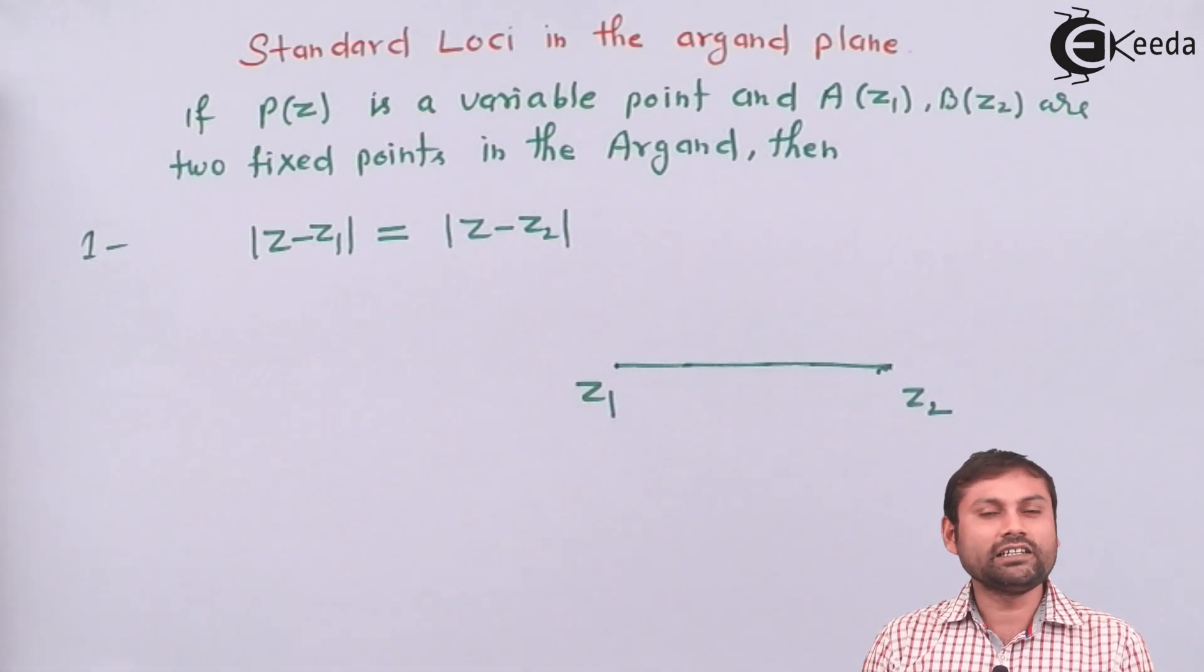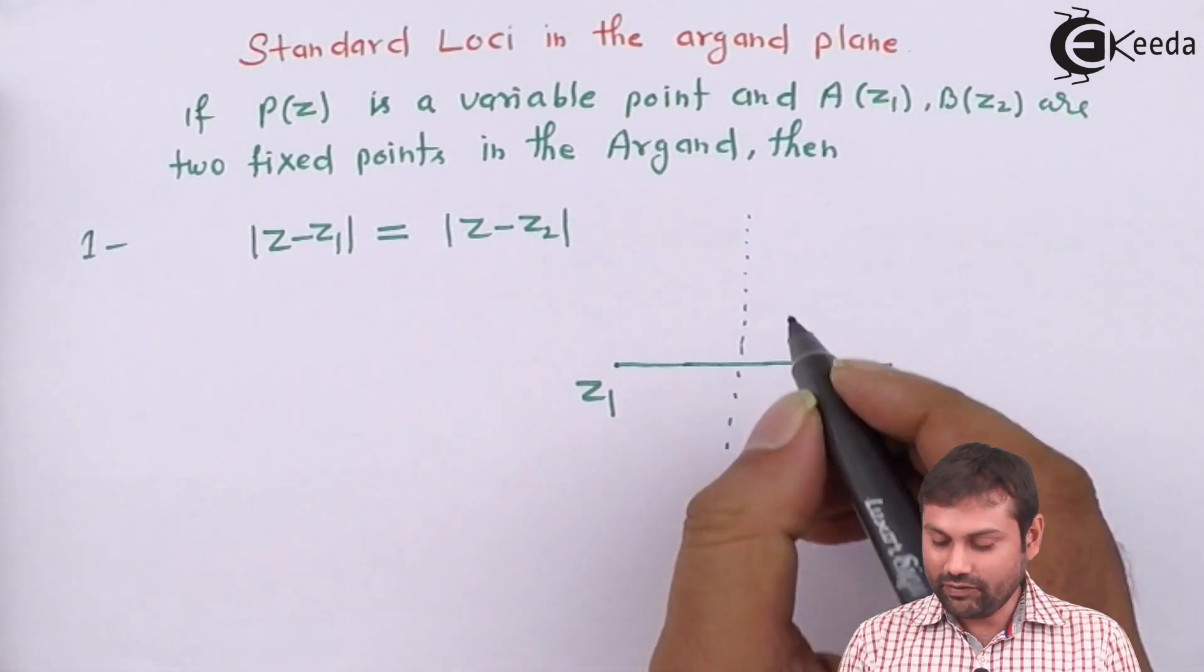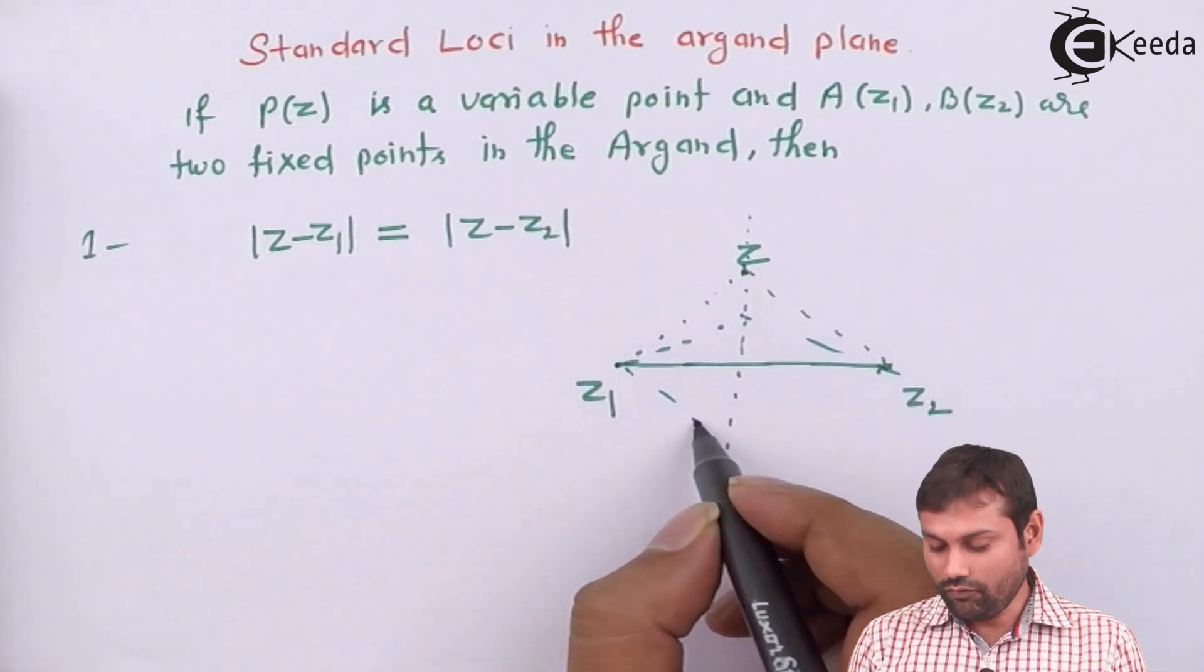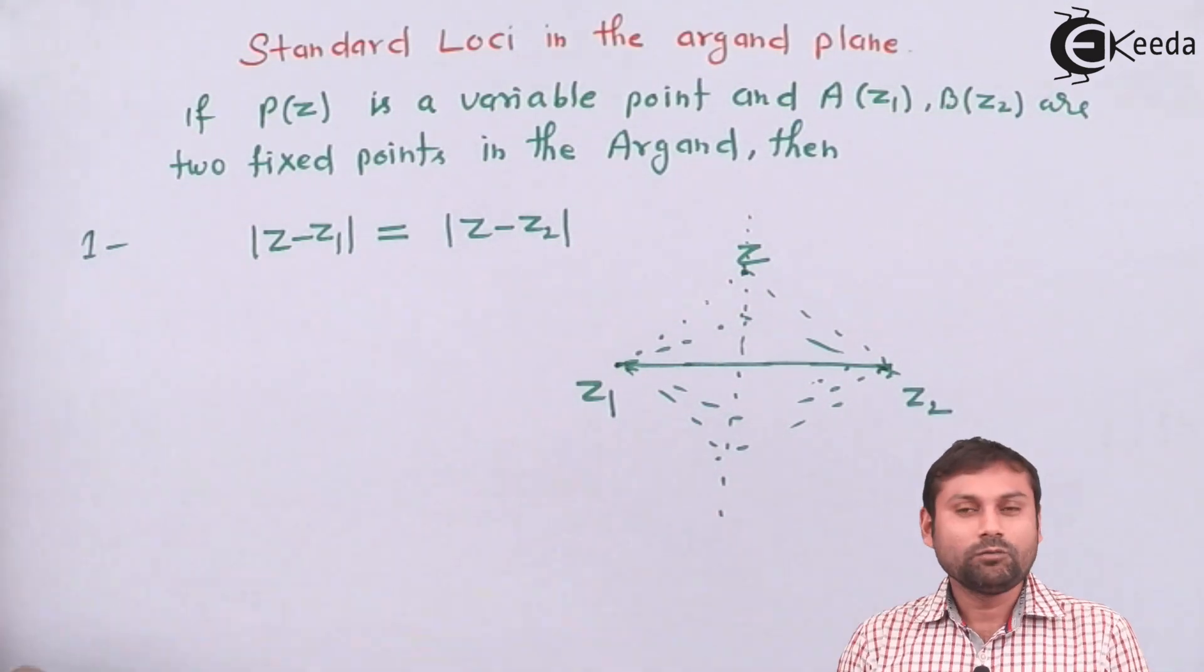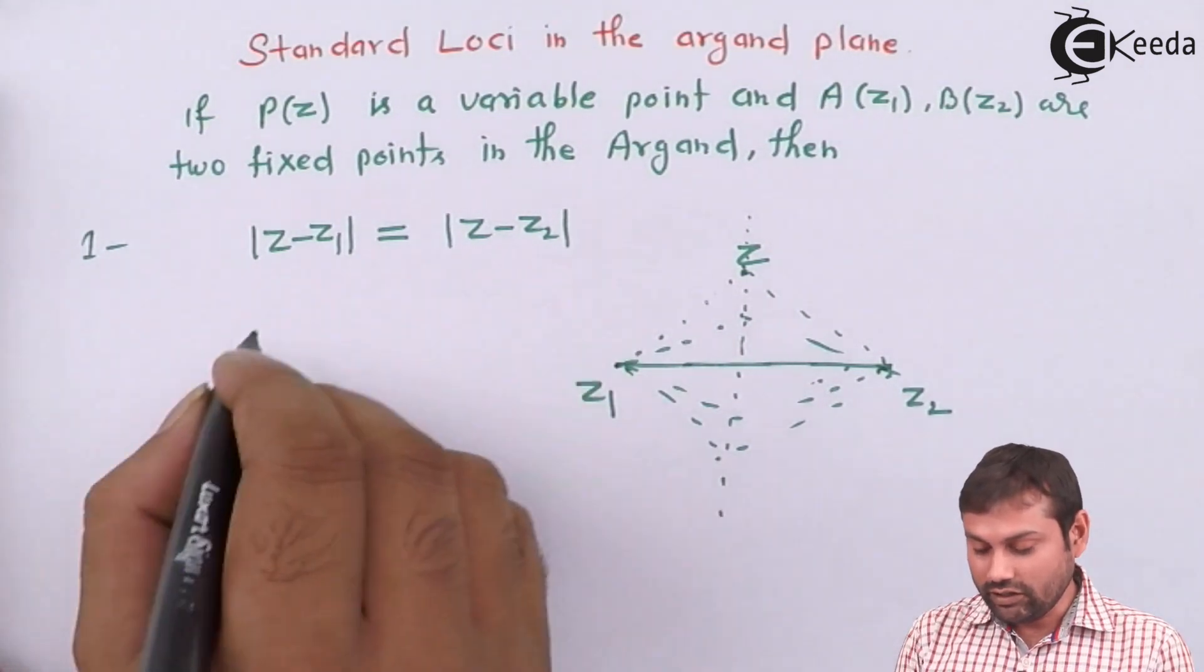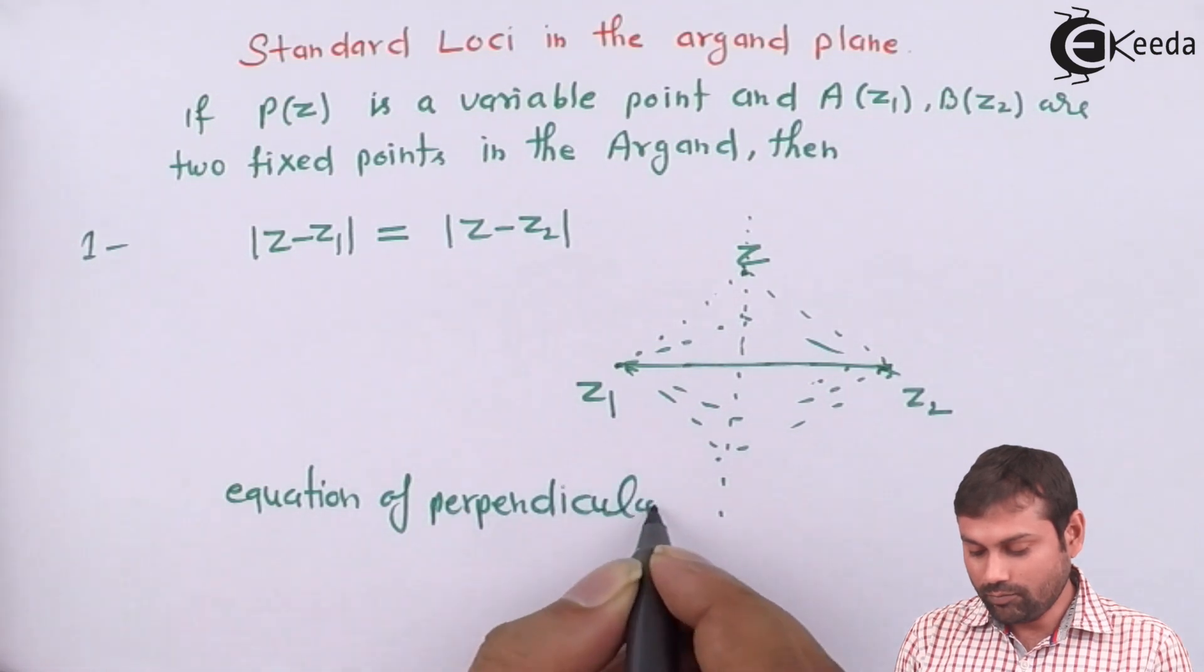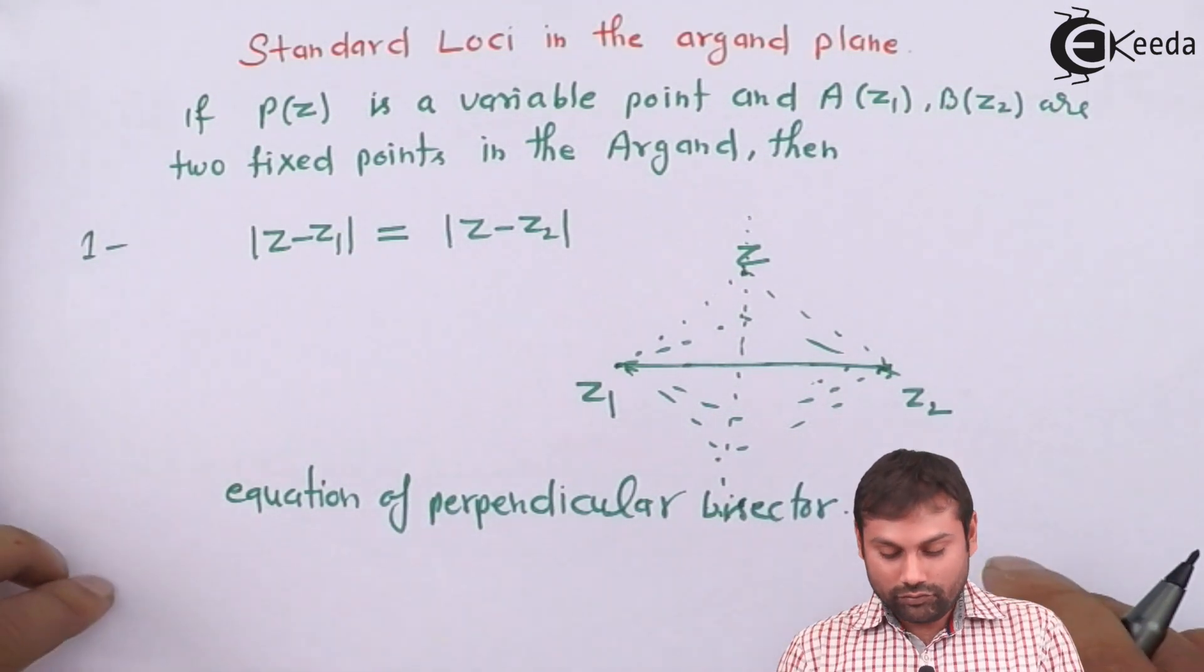You can see that z is a point of distance to z1, same from z2. So this only locus is possible that is perpendicular bisector. You can easily see that if I take z here at this point, this distance is same, this distance is same. So this is perpendicular bisector. This is the equation of perpendicular bisector.